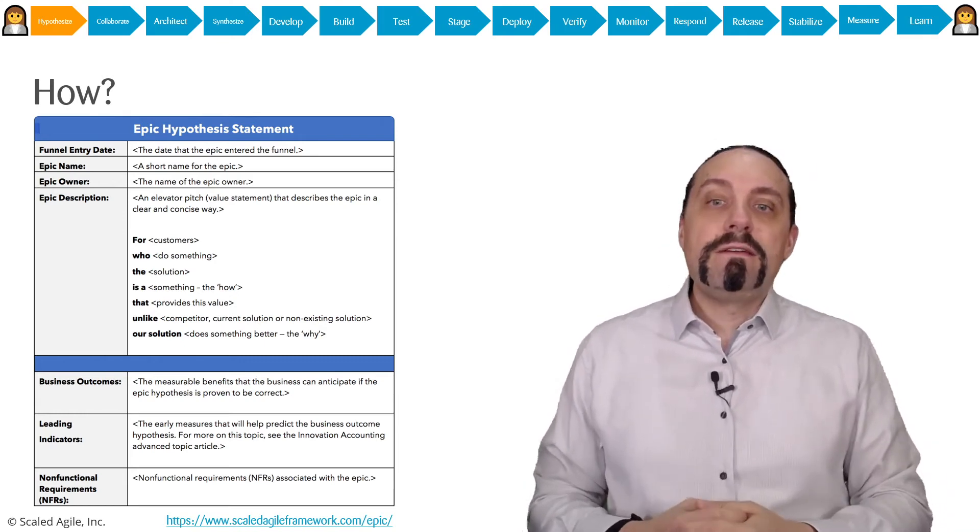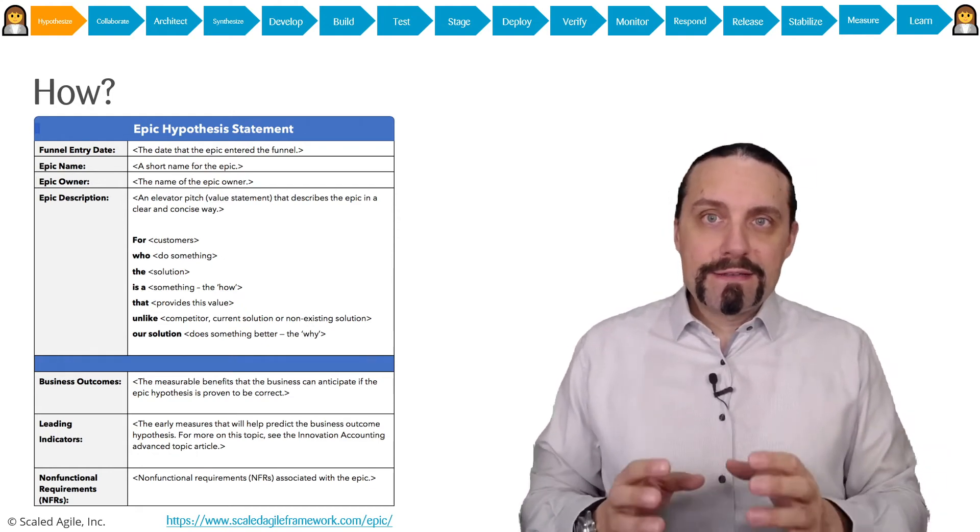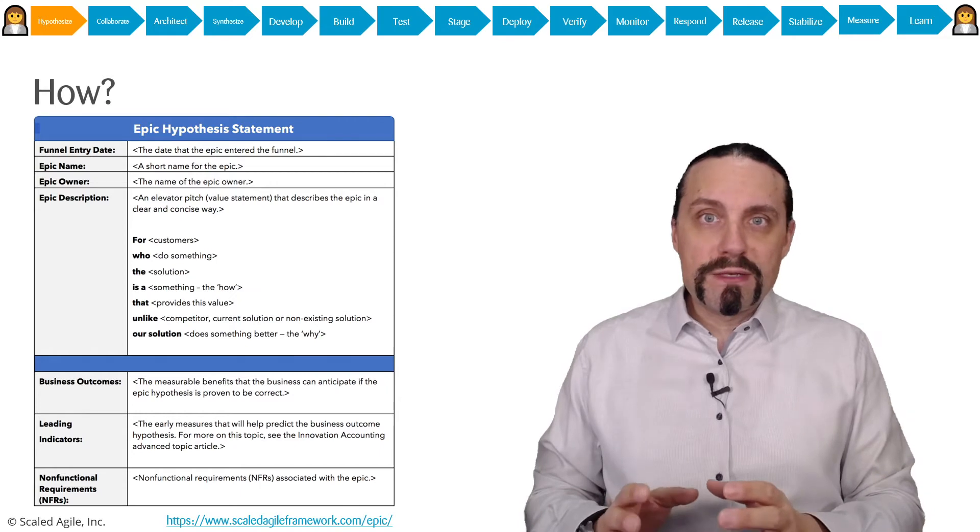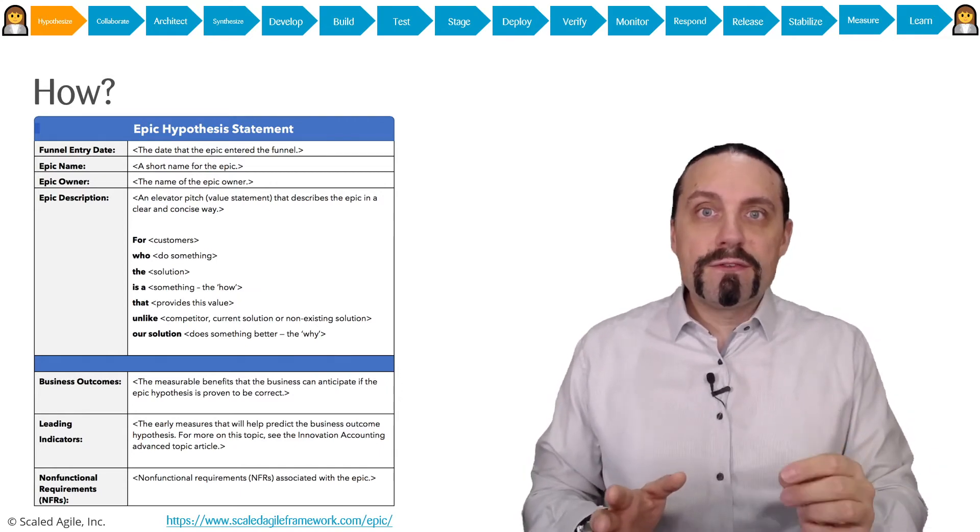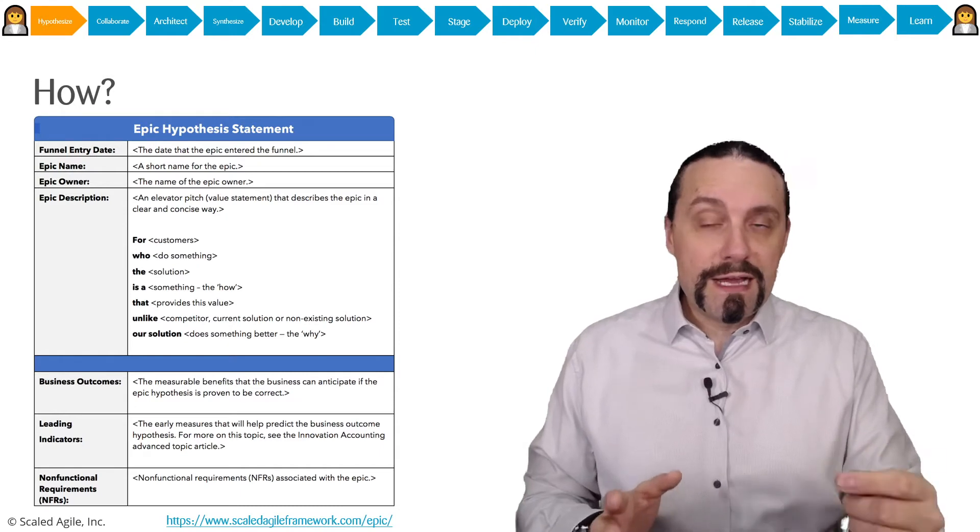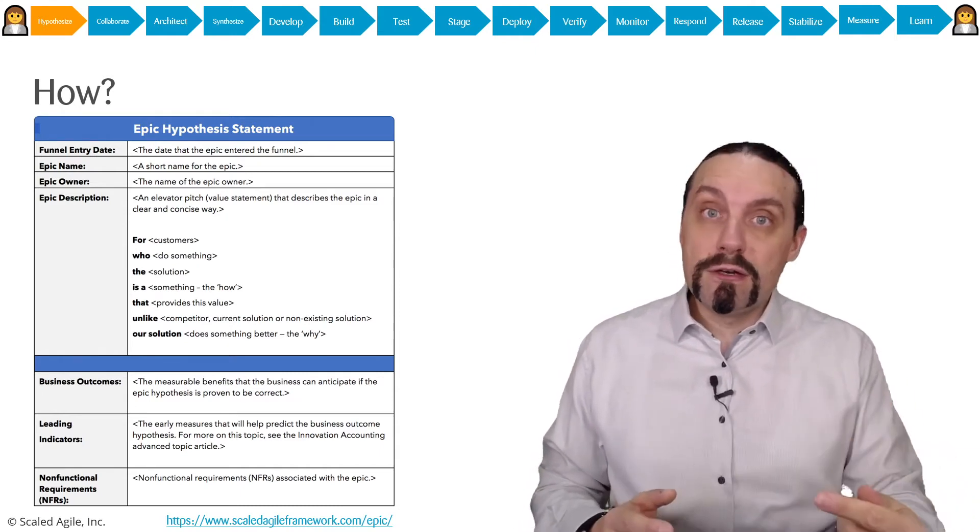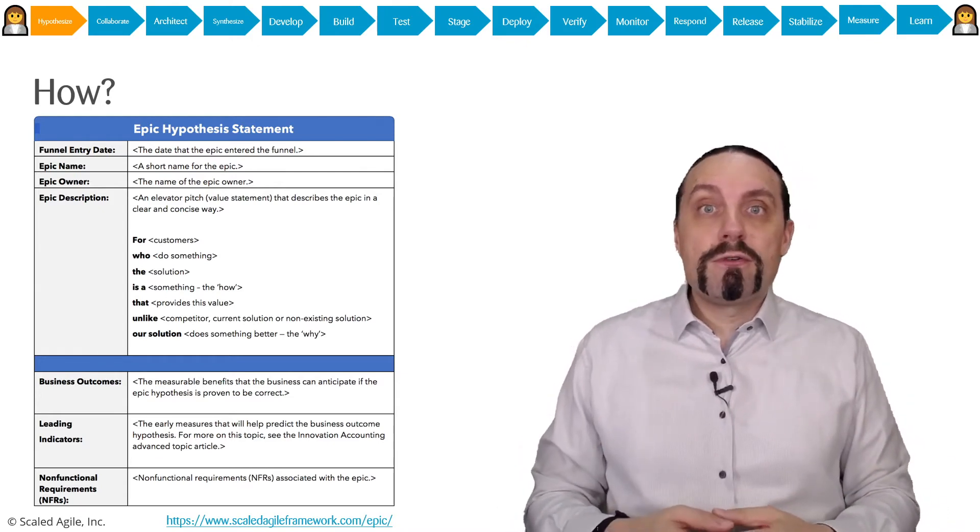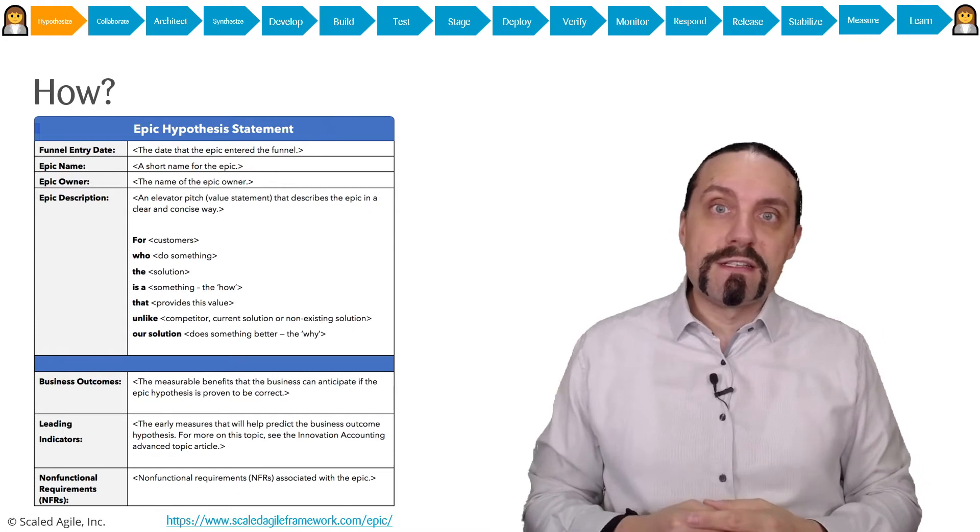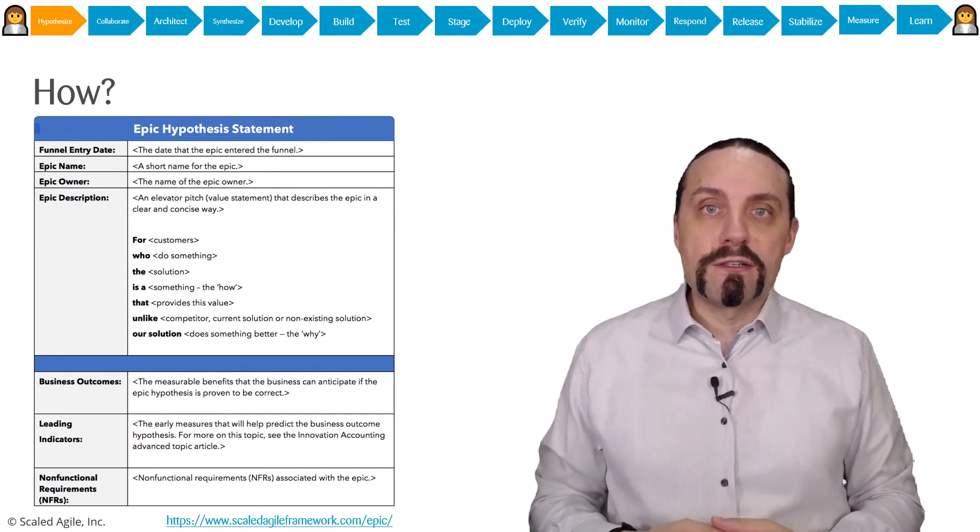And then we define the leading indicators. And leading indicators is something very important. Because when we are creating the MVP we want to measure the hypothesis as fast as possible. So that we know if we should invest more into this product or less into this product.